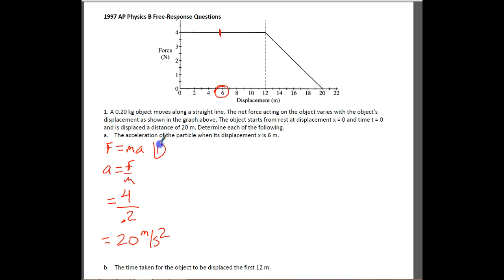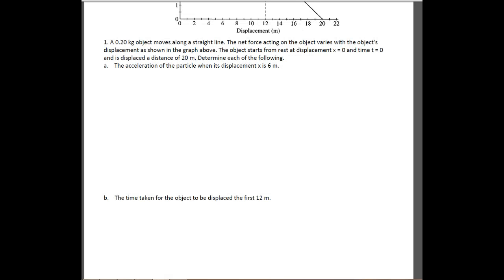It's worth three points. You get one point here, one for filling it in, and one for the correct answer with the correct unit. Next part of this one is letter B. It says the time taken for the object to be displaced for the first 12 meters. So that's all the way across here.